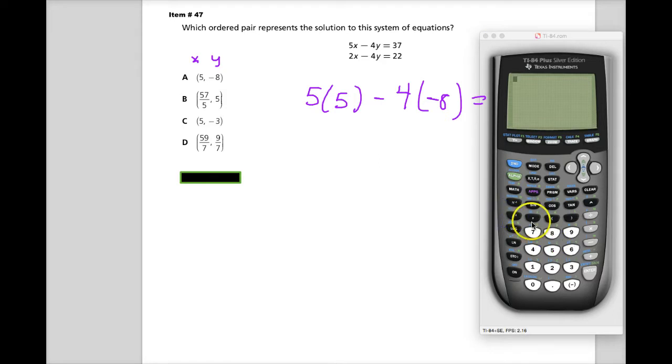So 5 times 5 minus 4 times negative 8. And if this is on that line, then I should get 37, that's what I'm looking for, and it's not. So, wah wah wah. I'll try the next one.